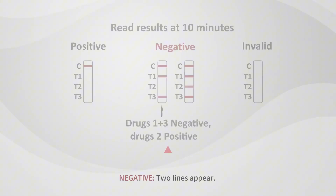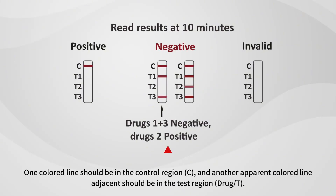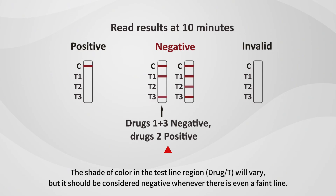For a negative result, two lines appear. One colored line should be in the control region C, and another apparent colored line should be in the test region T. This negative result indicates that the drug concentration is below the detectable level. The shade of color in the test line region T will vary, but it should be considered negative whenever there is even a faint line.